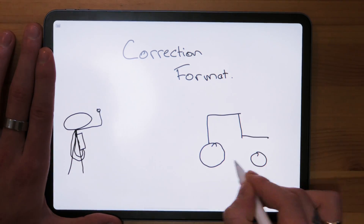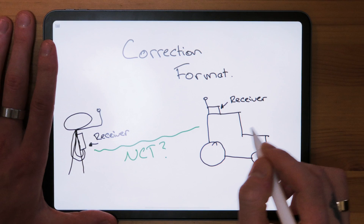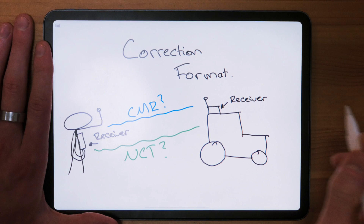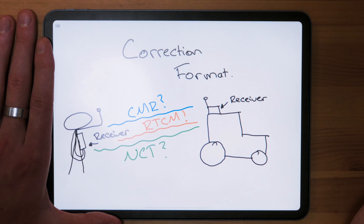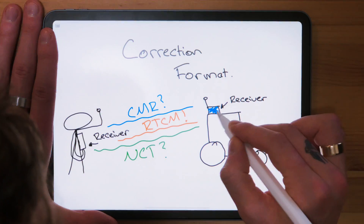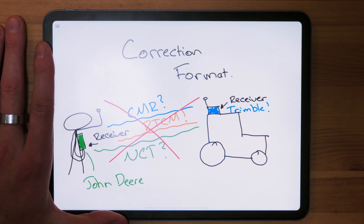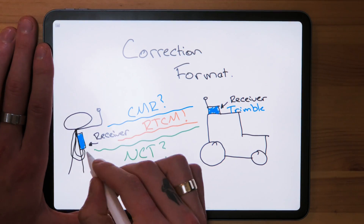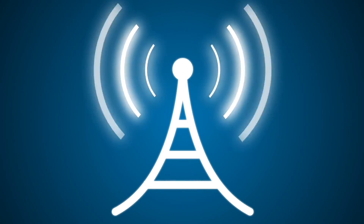RTK correction format is basically the language of RTK — comparable to iOS versus Android. Within precision agriculture, many manufacturers use their own proprietary formats: John Deere uses NCT, Trimble and CNH use CMR. However, the industry open format — which I would advise using — is RTCM, the most broadly used RTK format. All you need to ensure is that your base station receiver and your machine receivers share the same compatible RTK correction format. Your best bet is to select a base station using the open RTCM format, such as Novatel receivers.